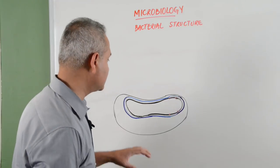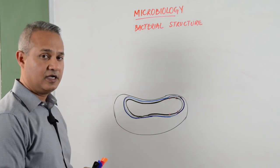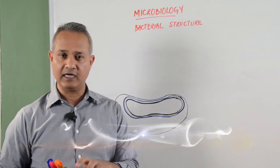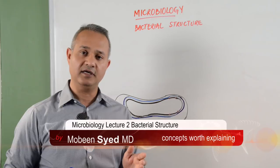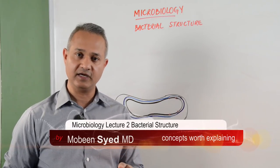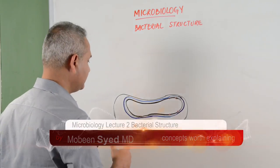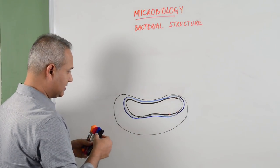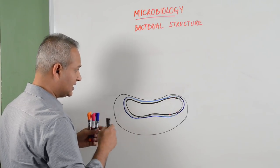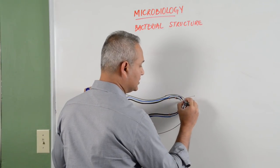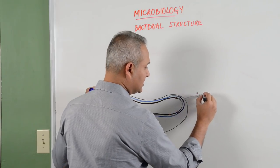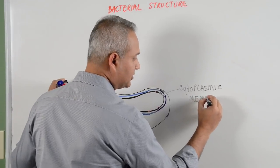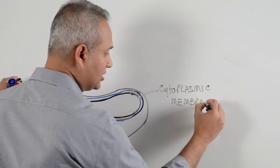Continuing with bacterial structures, I have made a bacteria here. Remember, the structure of a bacteria is slightly different between the gram positive, gram negative, and the pleomorphic bacteria which do not have a cell wall. The basic structure, from inside out, starts with the cytoplasmic membrane — this is the same membrane present in all cells.